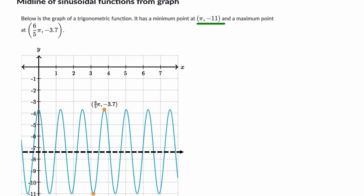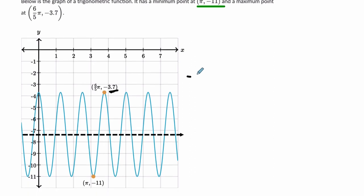So right here, we take this height, negative 3.7, and we add it to this height, negative 11, and divide that by 2. You're going to get negative 7.35, which is the height of our midline. It's the average of the peak and the valley, max and min. Alright, hope that helped.